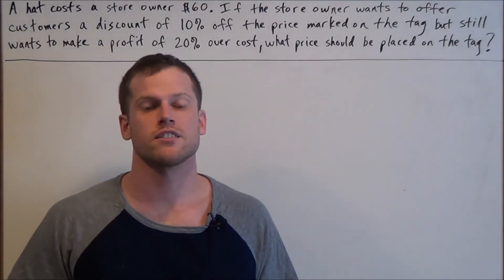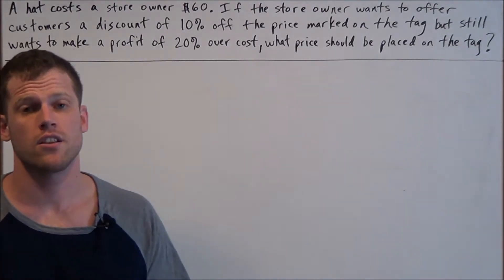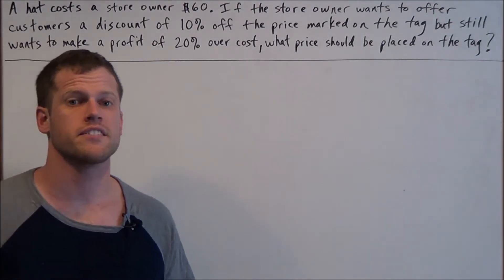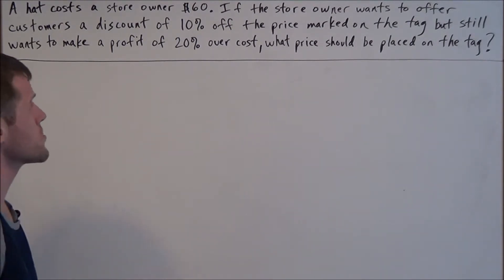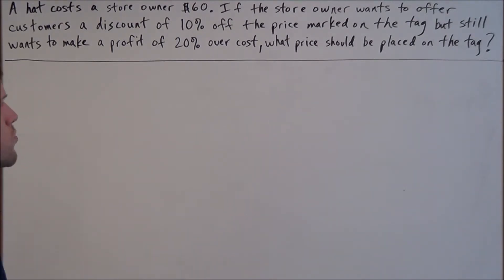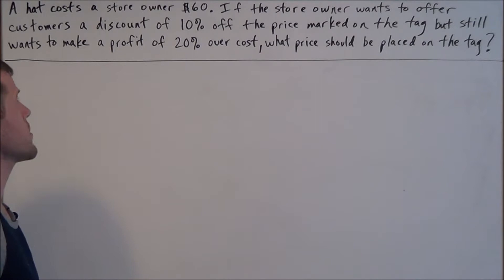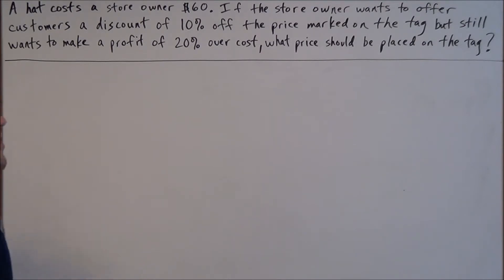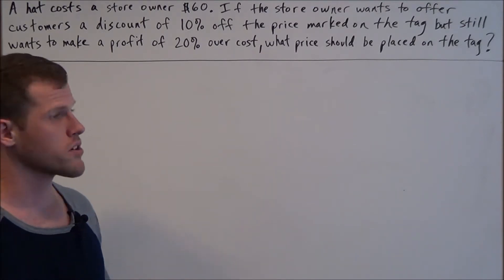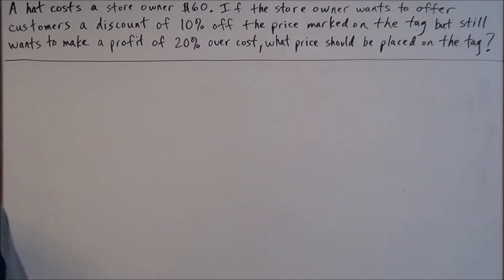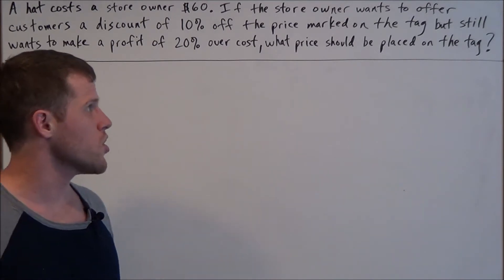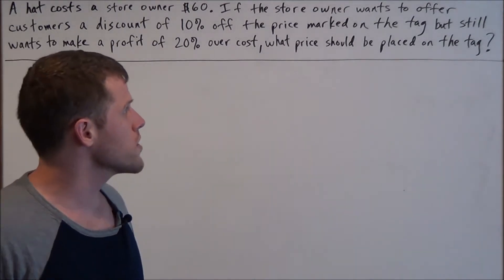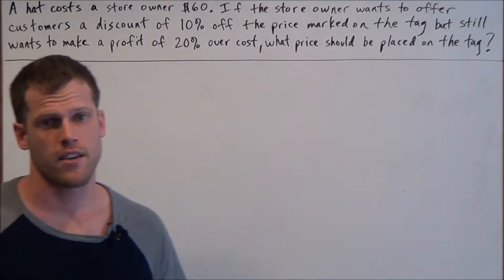Hi, my name is Vincent and today I want to take a look at an SAT problem involving percents. We have a hat that costs the store owner $60. The store owner wants to offer customers a discount of 10% off the price marked on the tag, but still wants to make a profit of 20% over cost. What price should be placed on the tag?